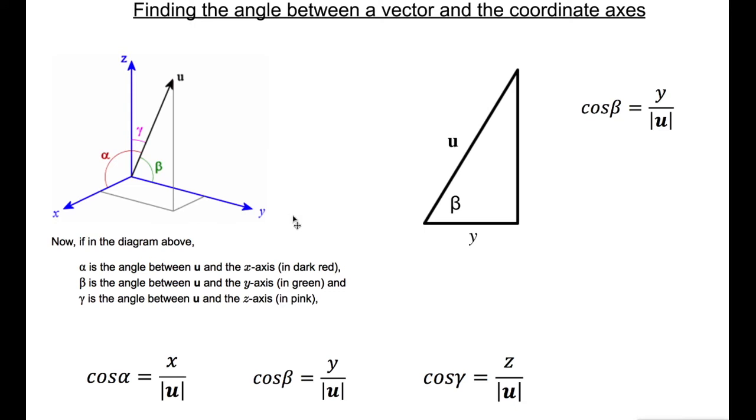So for the next one, between the vector and the x-axis, I'm going to call this here the x-axis. And we've got a very similar triangle, except I'll call that alpha and the x. And then you've got this result here, cos alpha equals x over modulus of u.